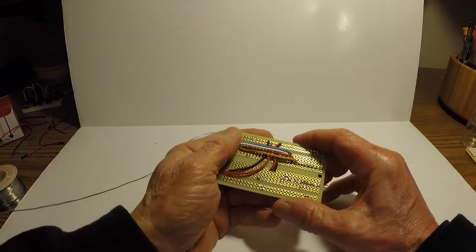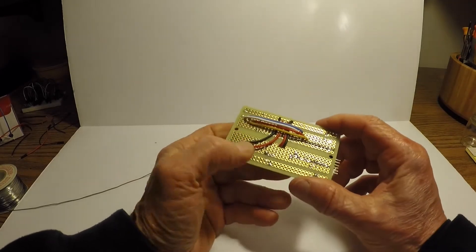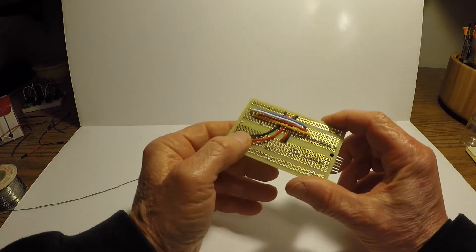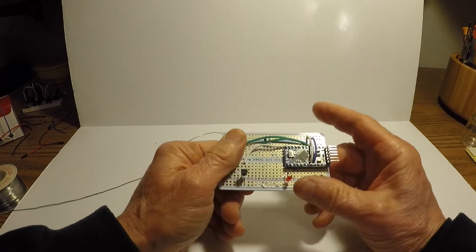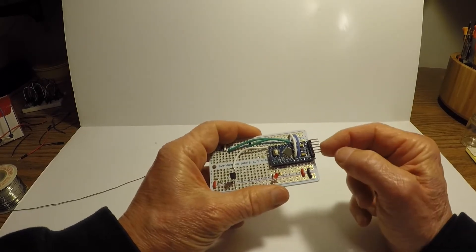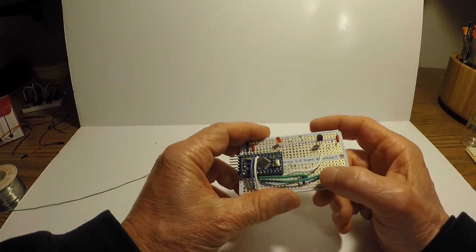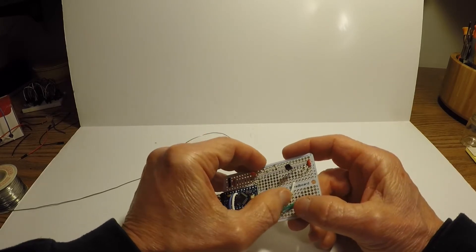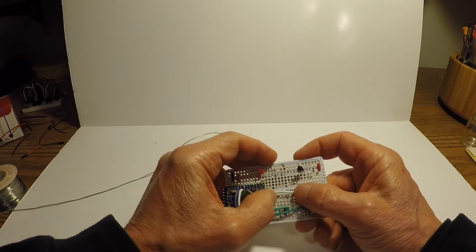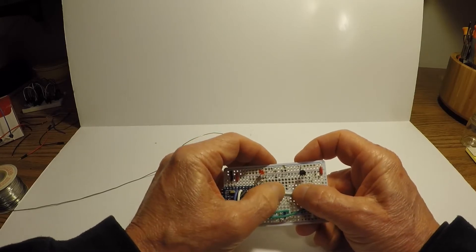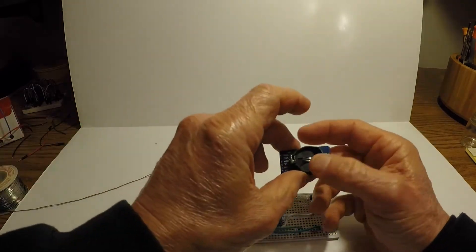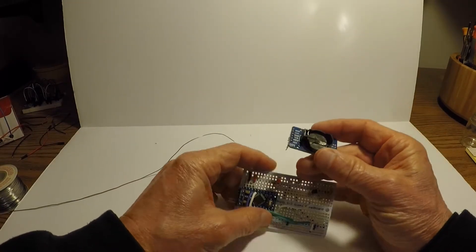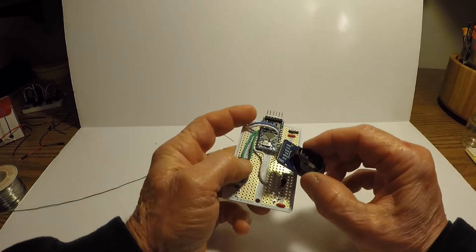That completes the wiring on the back side of the board. The next step is to install the component boards. We've already installed and soldered the Arduino. Next is the real time clock, then the light detector, and finally the memory card.